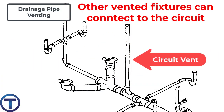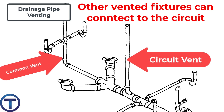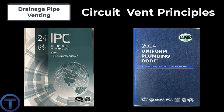The circuit vent opens this up. You can have a circuit with a dry vent in that circuit and other fixtures that are being vented connecting to and running through the circuit. This creates a lot of flexibility. All of these principles that we have examined for circuit vents apply to both the International Plumbing Code and the Uniform Plumbing Code.